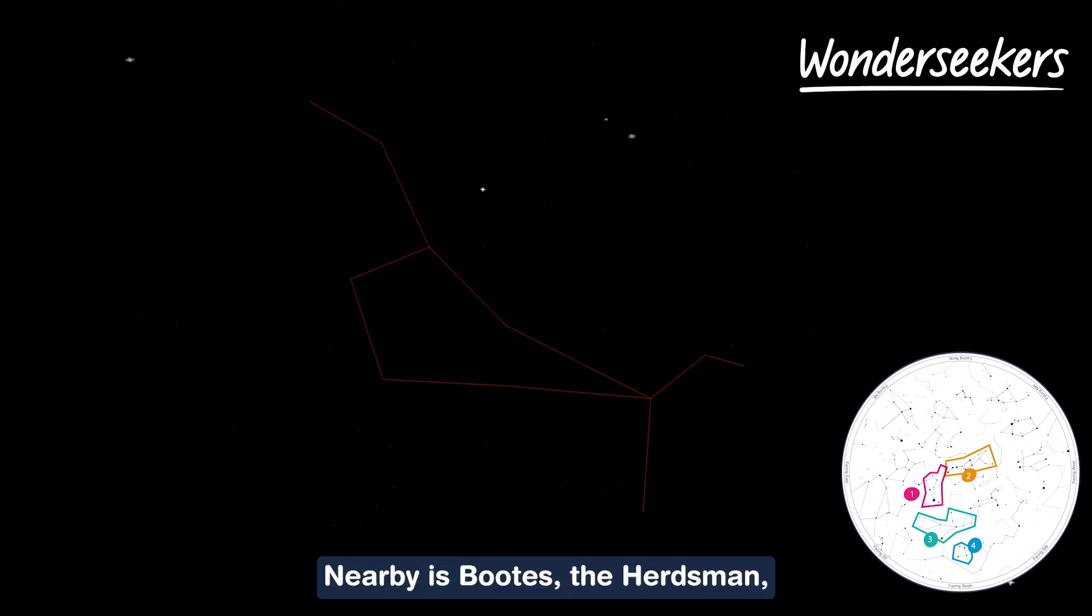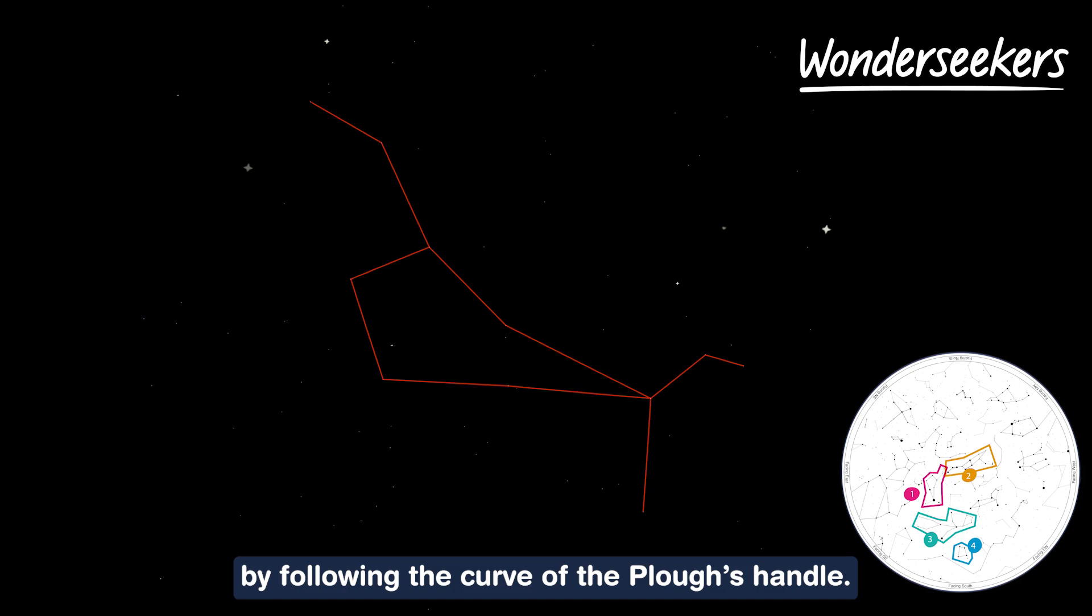Nearby is Bootes the herdsman which has lots of bright stars. Find it by spotting its brightest Arcturus by following the curve of the plough's handle.